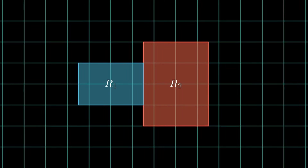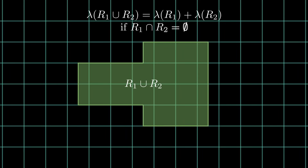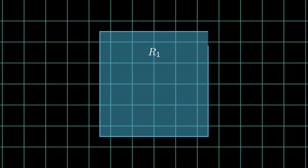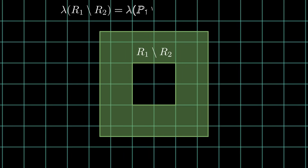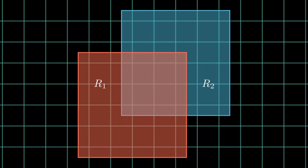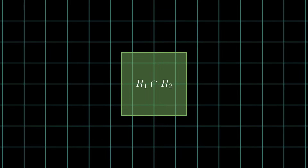Once we have two sets to which we can assign an area, we can construct the union — this set should also have some area. If they don't overlap, the area of the union equals the sum of the areas of the two sets. Another thing we can do is take the difference of one set from another; the area of the difference equals the area of the first set minus the area of the second set, if the second set lies inside the first. We can also take the intersection of two sets.